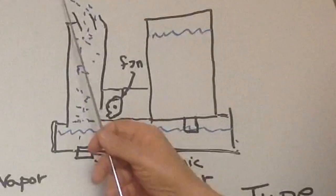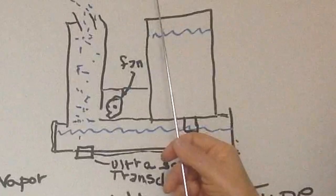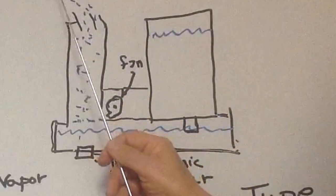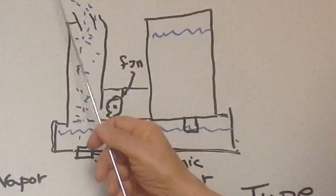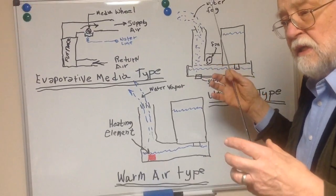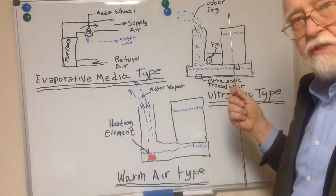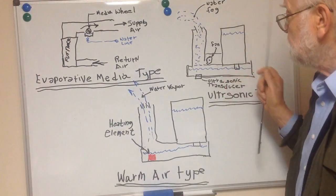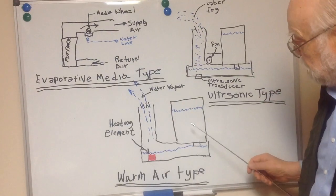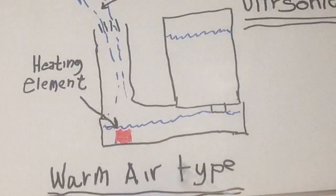A small fan pushes air into the chimney or column and this fog is pushed out into the room. It is a water fog — not water vapor — that comes out. Once this fog is introduced into the room, the microscopic water particles evaporate and burst into vapor, supplying water vapor into the air inside the house.